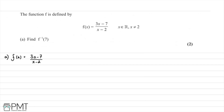The plan of attack is to find f⁻¹(x) and then substitute in x = 7. We rewrite the function as y = (3x - 7) / (x - 2). Our first step is to swap x and y, and our second step will be to solve for y.